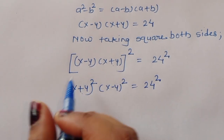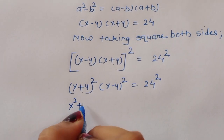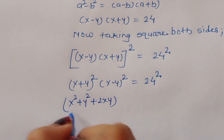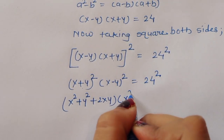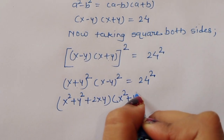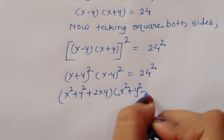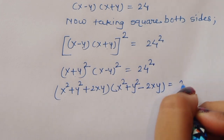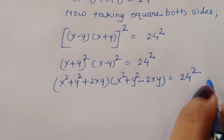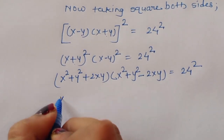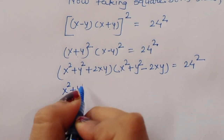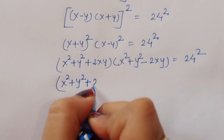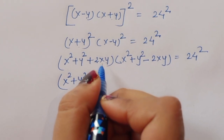Now expanding: x plus y whole squared is x squared plus y squared plus 2xy, and x minus y whole squared is x squared plus y squared minus 2xy. So the product is x squared plus y squared plus 2xy, times x squared plus y squared minus 2xy, equal to 24 squared.